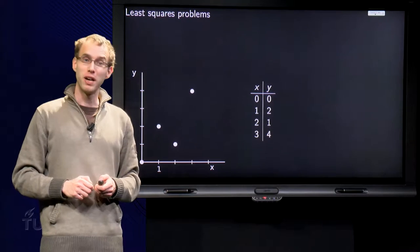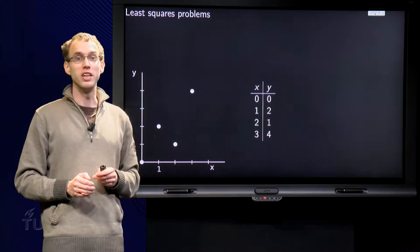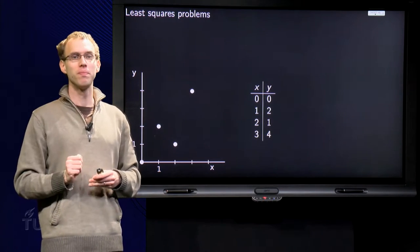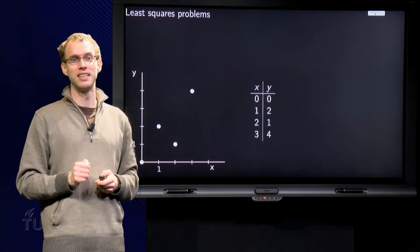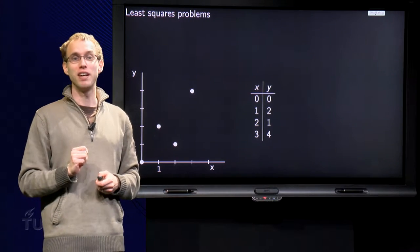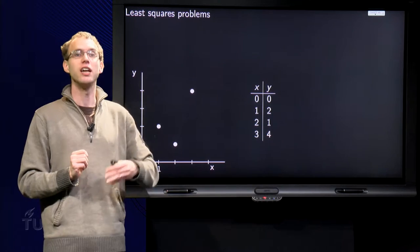When you are performing experiments, what you often do is varying one parameter, let us call this one x, and measuring the effect on another parameter, say y.